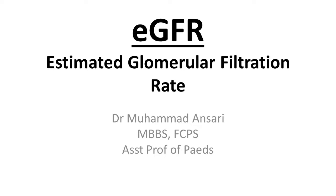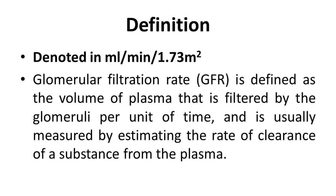eGFR is calculated in ml per minute per 1.73 meter square body surface area, which is the body surface area of an adult male. Glomerular filtration rate is defined as the volume of plasma filtered by the glomeruli per unit of time, and is usually measured by estimating the rate of clearance of a substance from the plasma — for example, creatinine.